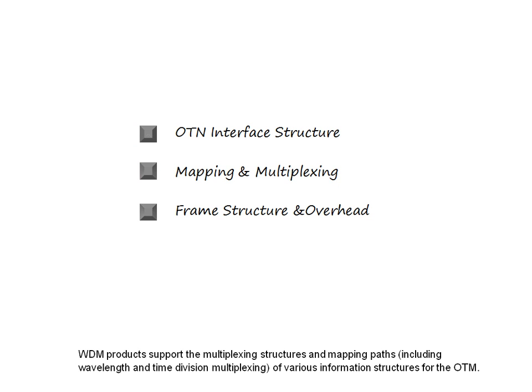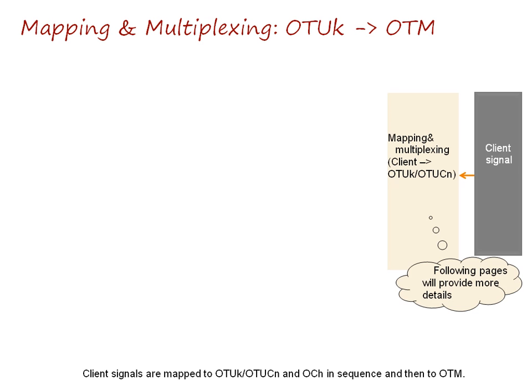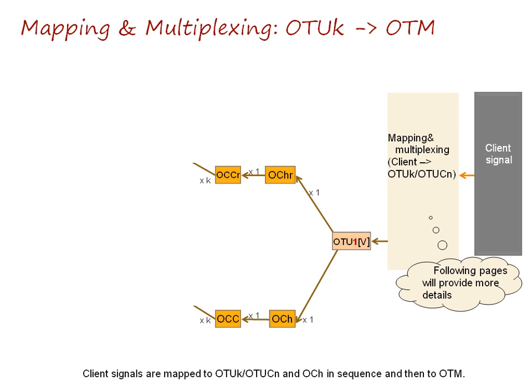WDM products support the multiplexing structures and mapping paths, including wavelength and time division multiplexing of various information structures for the OTM. Client signals are mapped to OTUK, OTUCN, and OCH in sequence and then to OTM.